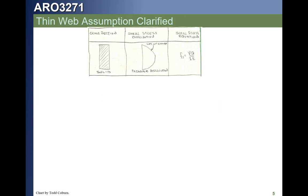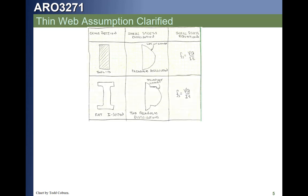If we have a rectangular cross section, applying VQ over IT gives a parabolic distribution of shear stress that goes from zero to maximum at the centroid and back to zero. The shear stress changes significantly moving from top to bottom. Now if we have an I-section — a fat I-section — we get nearly that same parabolic distribution of stress. If we imagine a wide section mirroring those dimensions, the shear stress, because it's wide, gives a parabolic distribution that doesn't go very high.